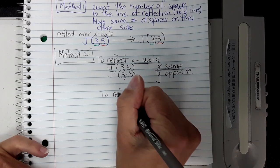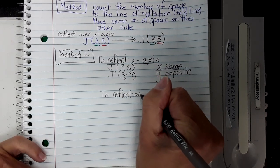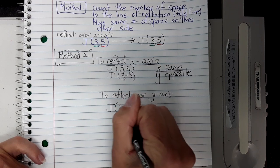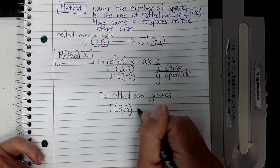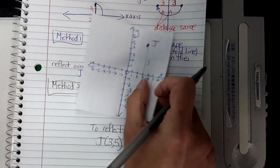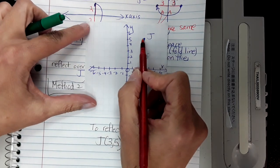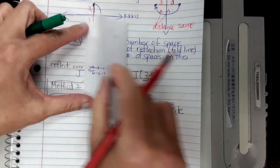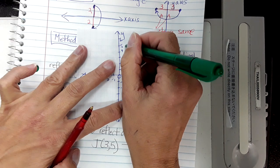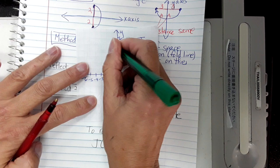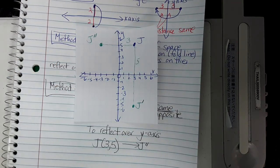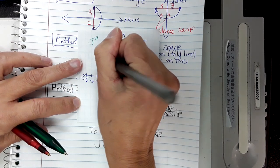Now I'm going to do one where you reflect over the y-axis. I'm going to take that same point J, which was (3, 5), and reflect it over the y-axis. This time I'm going to call it J double prime. So going back to my graph paper with (3, 5), I want to reflect this way over the y-axis. Method 1 would be to count the blocks to the line of reflection: 1, 2, 3. So I count the blocks: 1, 2, 3 — this is where that new point should be. J double prime is the point (negative 3, positive 5).